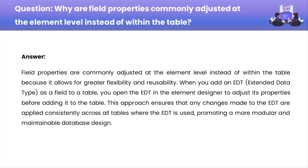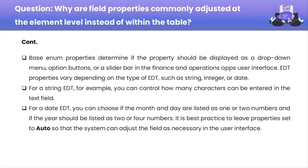Also, base enum properties determine if the property should be displayed as a drop-down menu, option button, or a slider bar in the Finance and Operations app user interface. EDT properties vary depending on the type of EDT, such as string, integer, or date. In the case of a string EDT, you can control how many characters can be entered in the text field.